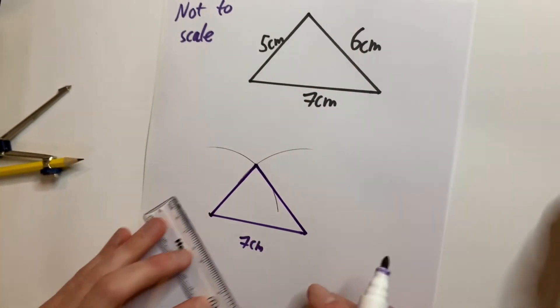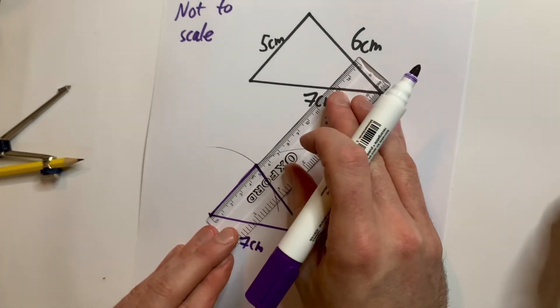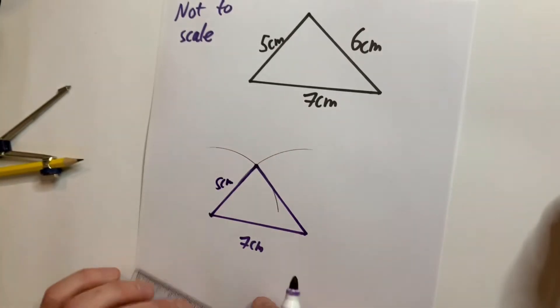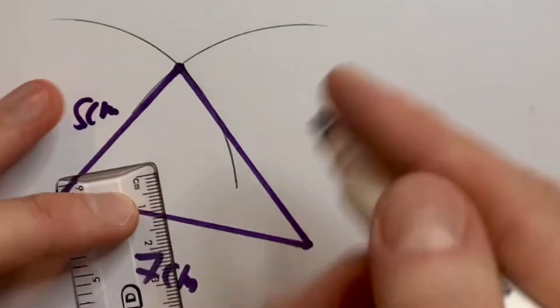Now if I measure those, this line should be five centimeters. Put my ruler here. You can see that is five centimeters right there. And this one here should be six centimeters. And you can see it is six centimeters.